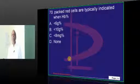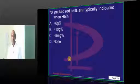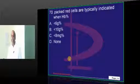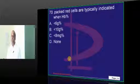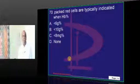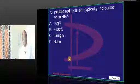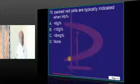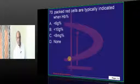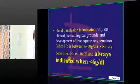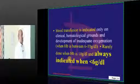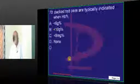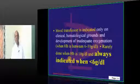Packed cells — the answer was 'none,' but there are options still available. Practically, if the hemoglobin is above 10 we don't transfuse; if it is below 6 it is always indicated. So the correction should go to option A.